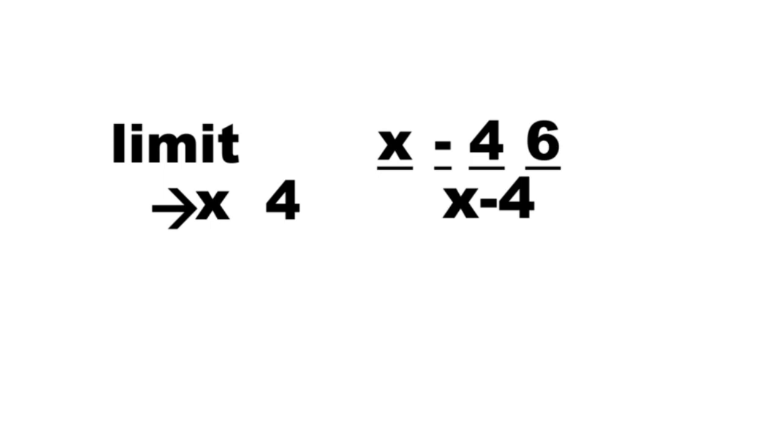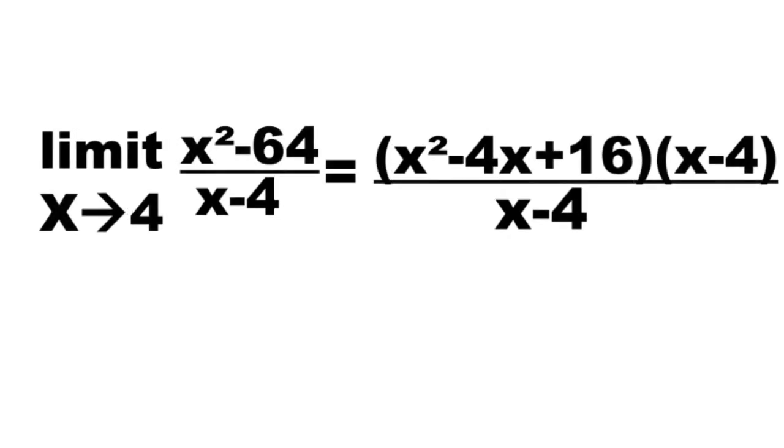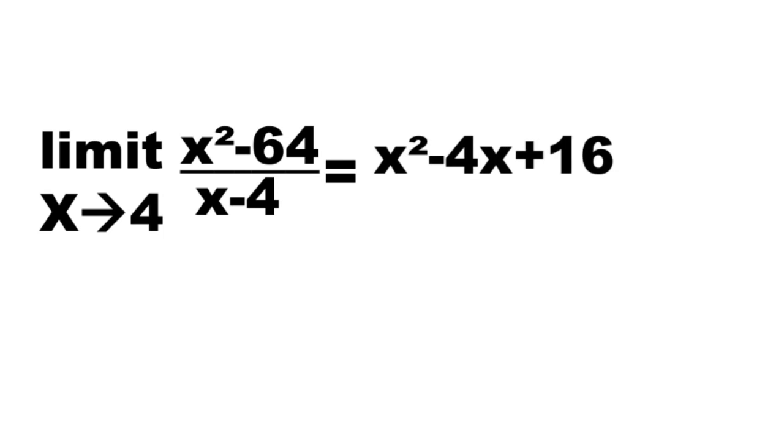Factor the numerator as difference of two cubes with the factor quantity x squared minus 4x plus 16 times quantity x minus 4 over x minus 4. Cancel common factor x minus 4, leaving x squared minus 4x plus 16.